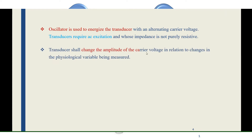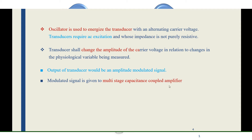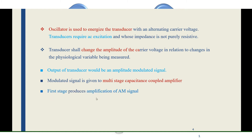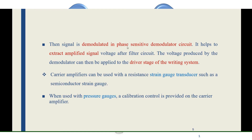When there is a change in the measured parameter, there is a change in the amplitude of the carrier signal. The output of the transducer is called the amplitude modulated signal. This modulated signal is given to the amplifier, which is called a multi-stage capacitance-coupled amplifier. The first stage produces the amplitude modulated signal, and the second stage contains the phase-sensitive demodulator circuit.